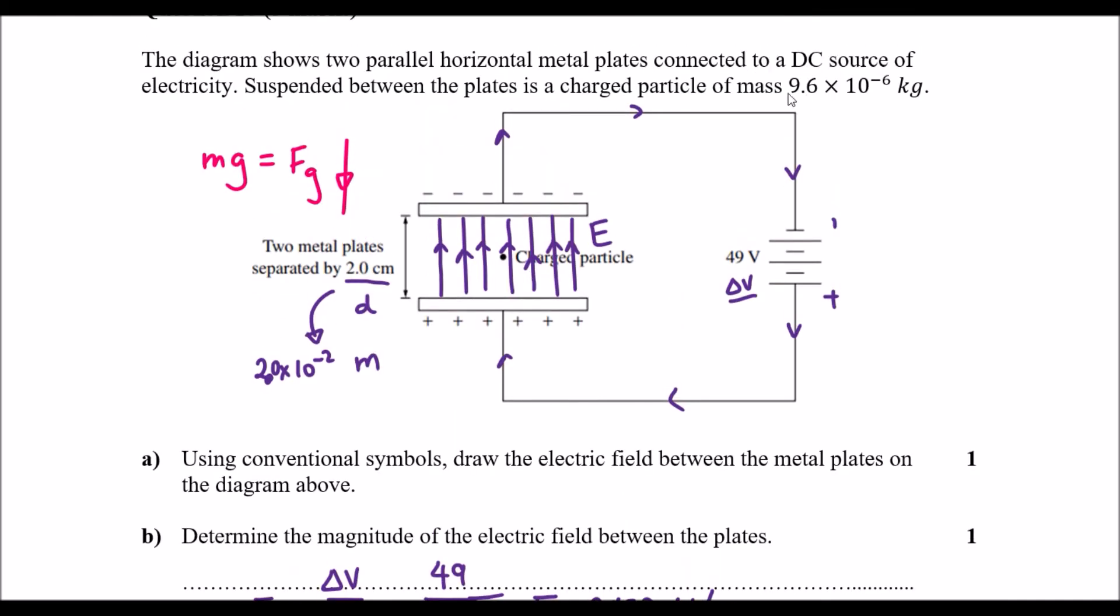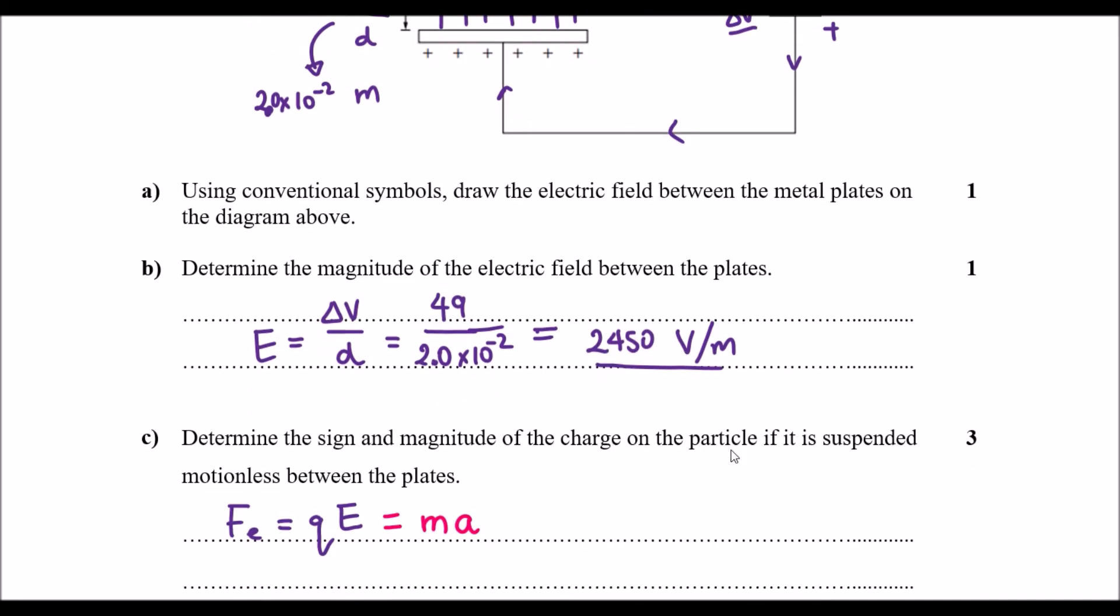Now, I know what M is. That's 9.6 times 10 to the power of negative 6. And obviously, check your data sheet to find what the value of G is. In this case, A and G are the same thing. It is 9.8 meters per second squared.